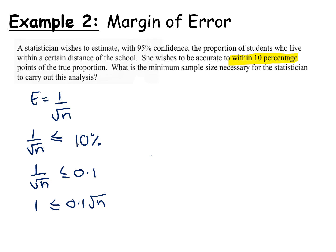Divide both sides by 0.1, so I get 1 over 0.1 is less than or equal to root n. So cleaning that up, I get 10 is less than or equal to root n. I'm just going to flip it for ease because I like to have my letter on the left hand side. So it's greater than or equal to 10 and I'm going to square both sides. So I get n is greater than or equal to 100.